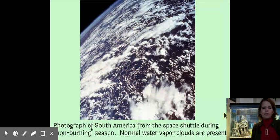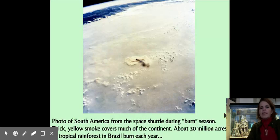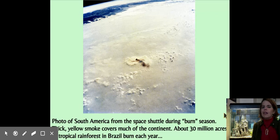All right, and then just a couple of interesting photos. These are photos that were taken by the space shuttle. This is a photograph of South America during what's called the non-burning season when people are not burning the rainforests and you have normal puffy water vapor clouds. This is the same photo taken from the space shuttle during what's called the burn season. Most of the continent of South America is covered with sort of a yellow smoke. It really becomes pretty shocking when you see it from outer space.